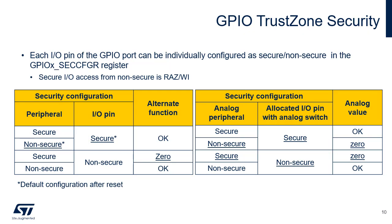When TrustZone is active, each input/output pin of the GPIO port can be individually configured as secure through the GPIO SECCFGR register. When a selected input/output pin is configured as secure, its corresponding configuration bits for alternate function, mode selection, and input/output data are secure against non-secure access. In the case of a non-secure access, these fields are read as zero and writes are ignored. Input/outputs with peripheral functions are also conditioned by the peripheral security configuration. In peripherals where the IO pin selection is done through alternate function registers, if the peripheral is configured as secure, it cannot be connected to a non-secure input/output pin.